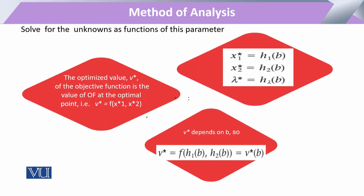जब हम directly इनकी values को calculate करते हैं, तो जो optimized value है — value of x — उसको optimized value of the objective function कहते हैं। x की बहुत सारी functions की form होंगी, लेकिन उसमें x की वो value जो best solution दे, उसी तरह x2 की value और lambda की भी — वो values जो हमारी constraint की condition को satisfy करें और optimal conditions को sort out करने में help करें।